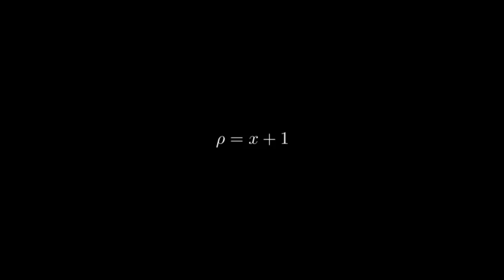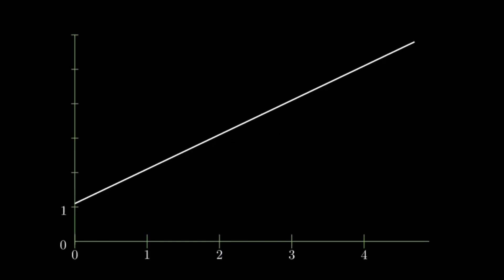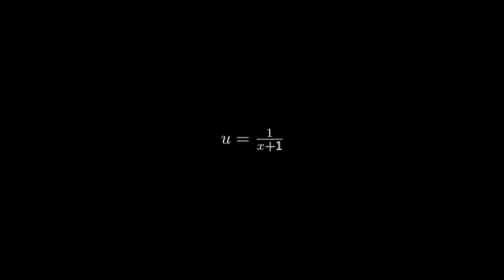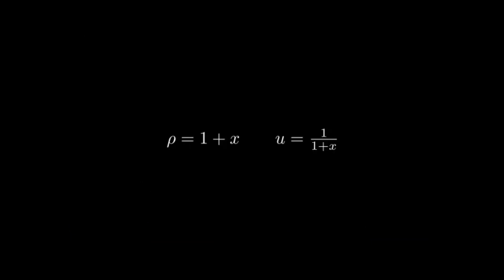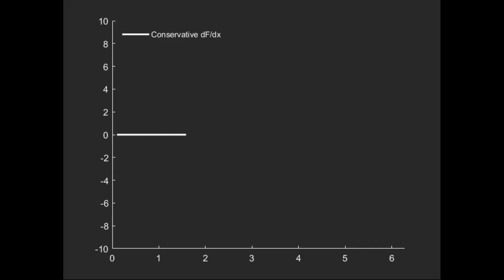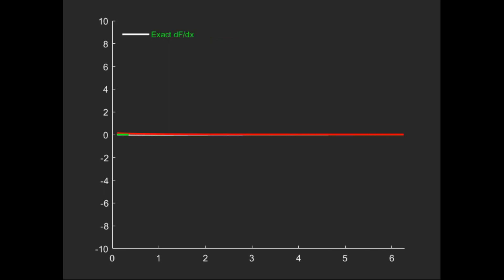The first is a simple smooth function where we approximate density as x+1. The velocity solution should satisfy the condition that rho multiplied by u is constant, so u = 1/(x+1). These solutions are not arbitrarily chosen — when density and velocity are multiplied, we get a constant value so the derivative is zero, meaning they are solutions of the steady-state continuity equation. The derivatives obtained using conservative and non-conservative discretization are compared with the exact solution, and there is almost no difference.